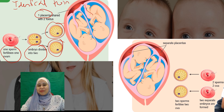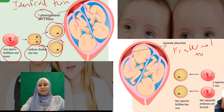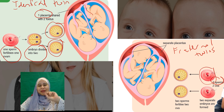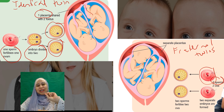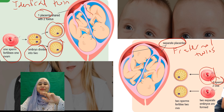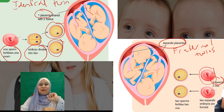In fraternal twins, you have two sperm and two ova. Each sperm will fertilize each ovum, giving two separate embryos. And there are also two separate placentas — each fetus will have its own placenta.